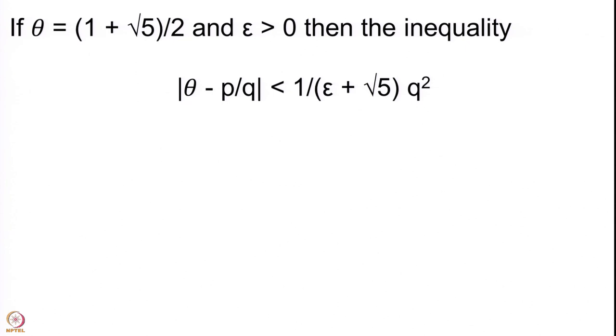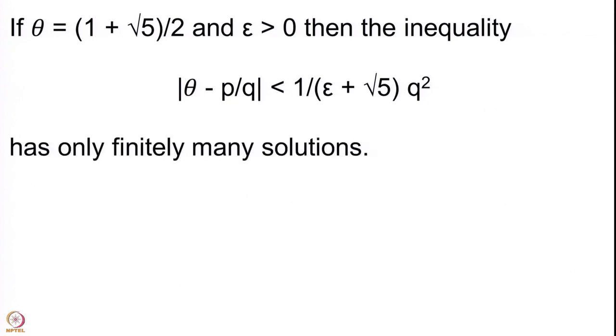There is no sequence of p_n/q_n satisfying this — a sequence is an infinite set. We are going to prove that this particular inequality holds for only finitely many rational numbers. We prove: if theta = (1 + √5)/2 and ε is any positive real number, then the inequality |theta − p/q| < 1/((√5 + ε)q²) has only finitely many solutions.